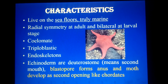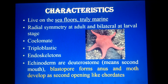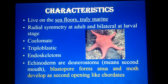Most importantly, they are deuterostomes. In protostomes, the blastopore at the gastrula stage develops into the mouth. But in deuterostomes — which echinoderms are — the blastopore forms the anus, and the mouth develops from a second pore which forms later. That is why they are deuterostomes, not protostomes.